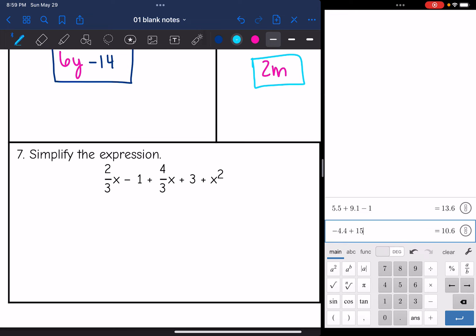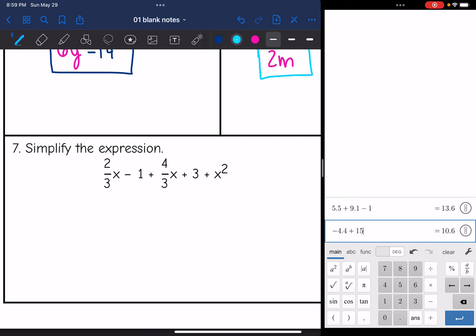Okay, I have an expression here. I have 2/3X minus 1 plus 4/3X plus 3 plus X squared. I'm going to start with the X squared. It is most proper to put that highest exponent first. And the X squared doesn't have another like term to combine with. So that's just going to be X squared.